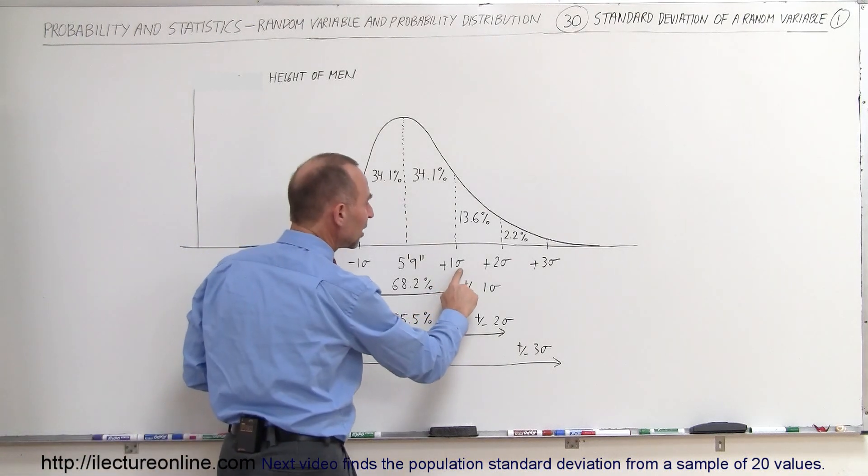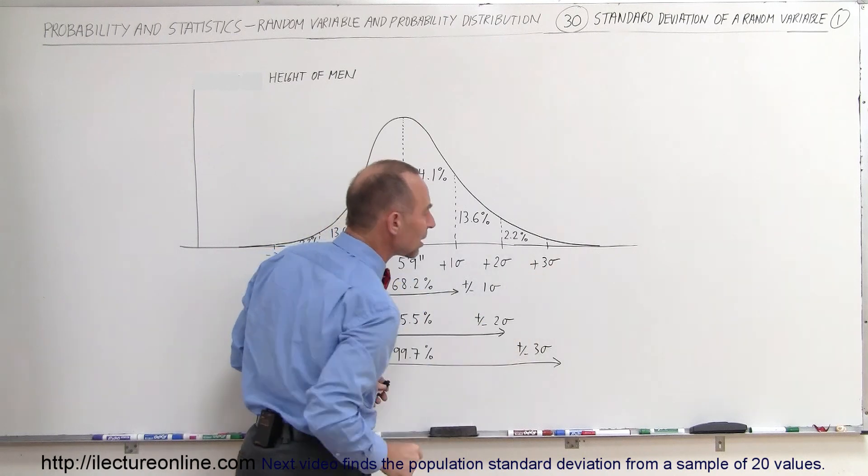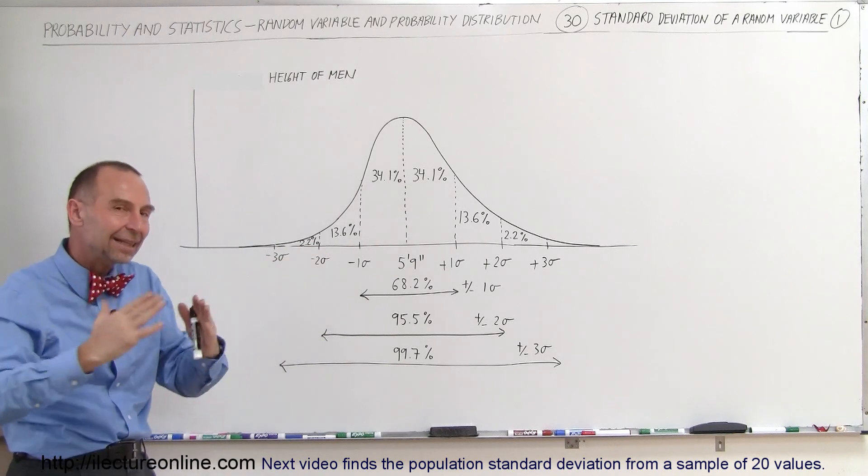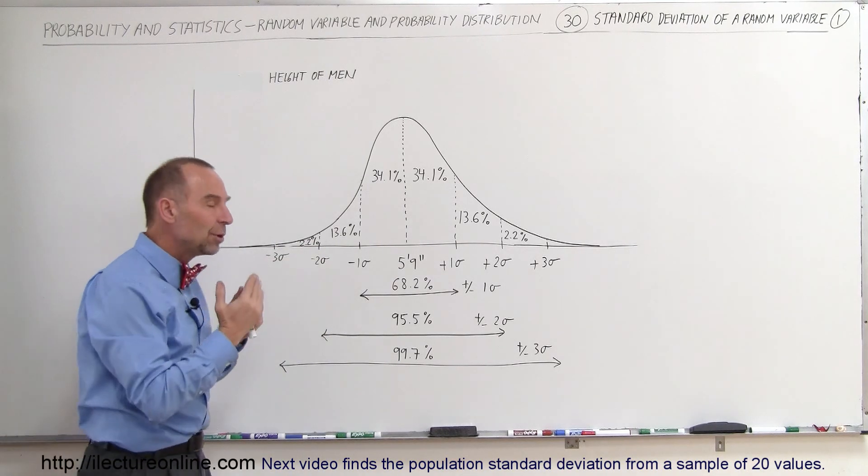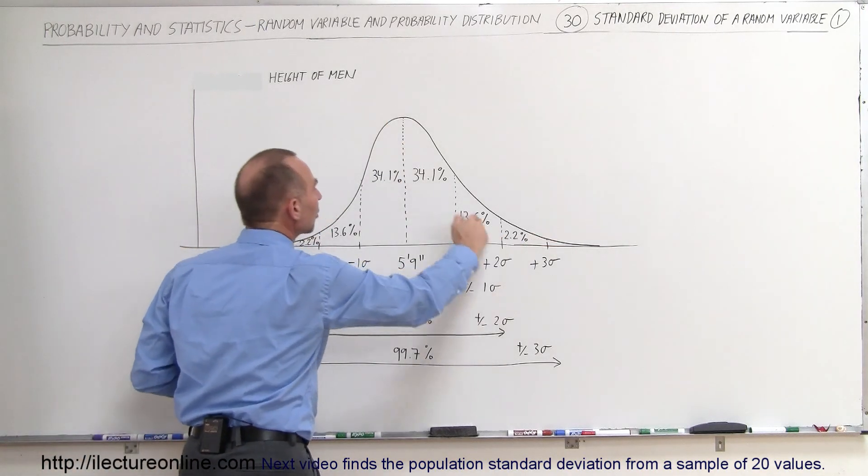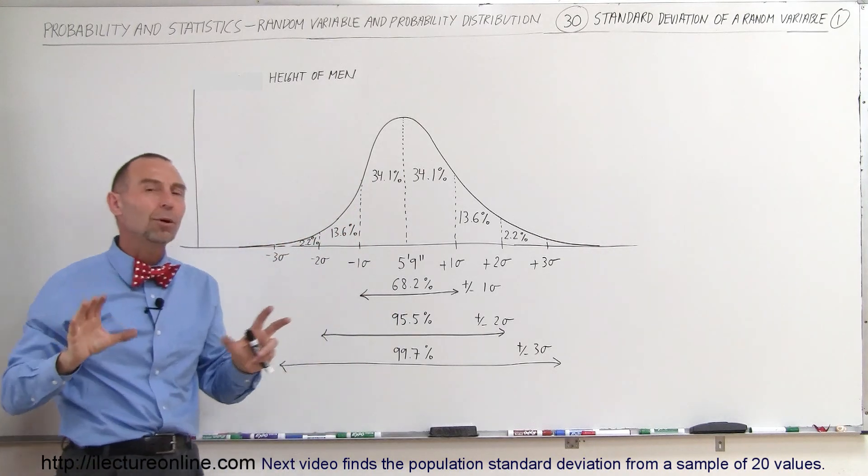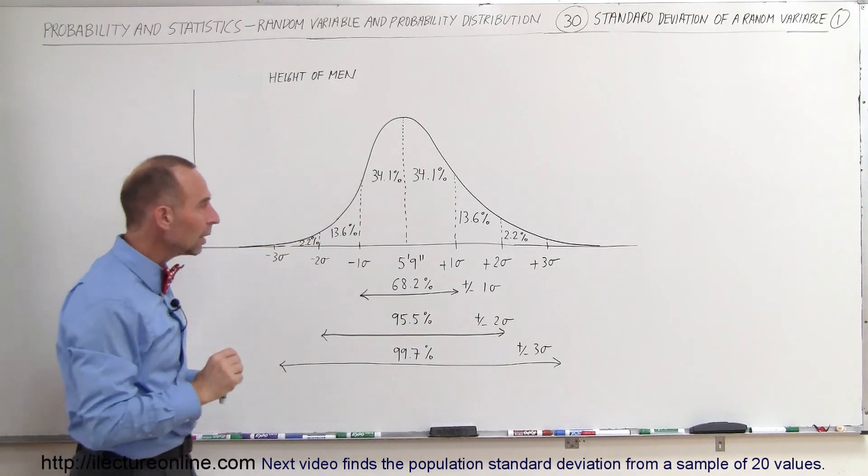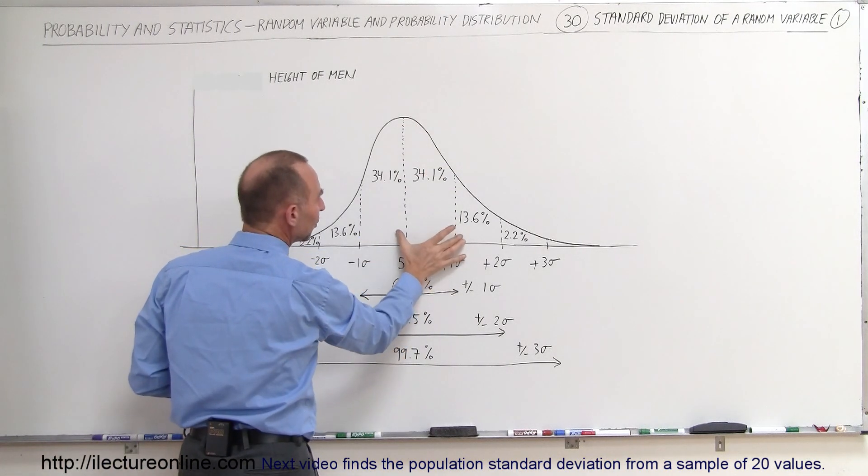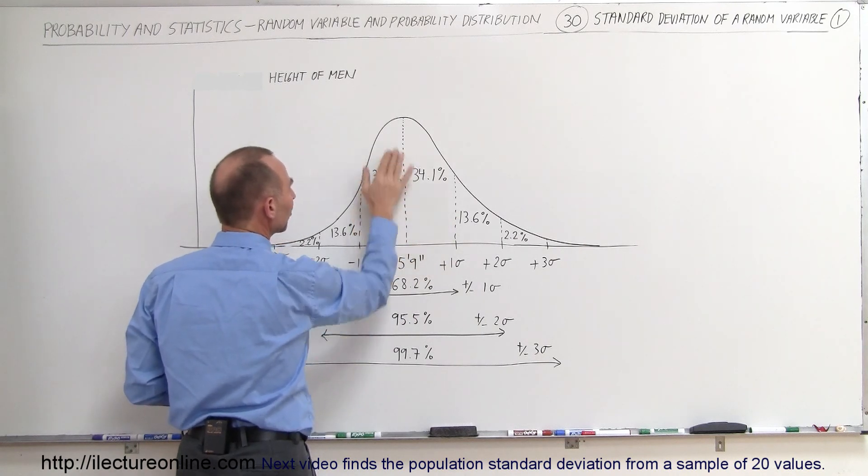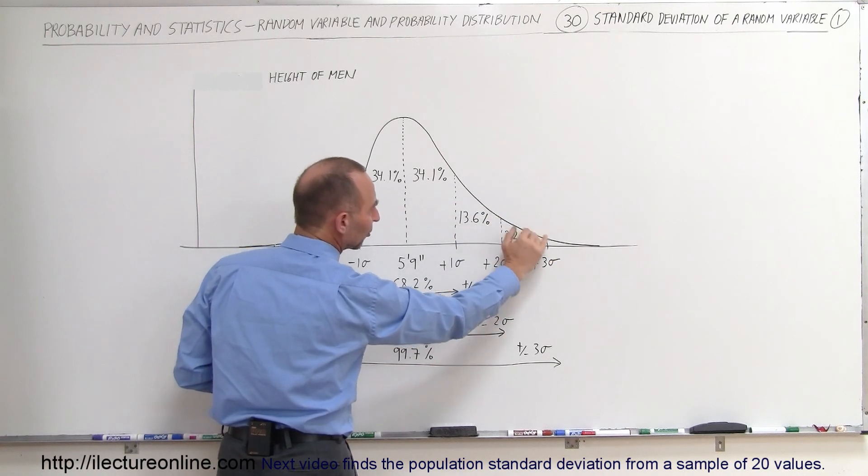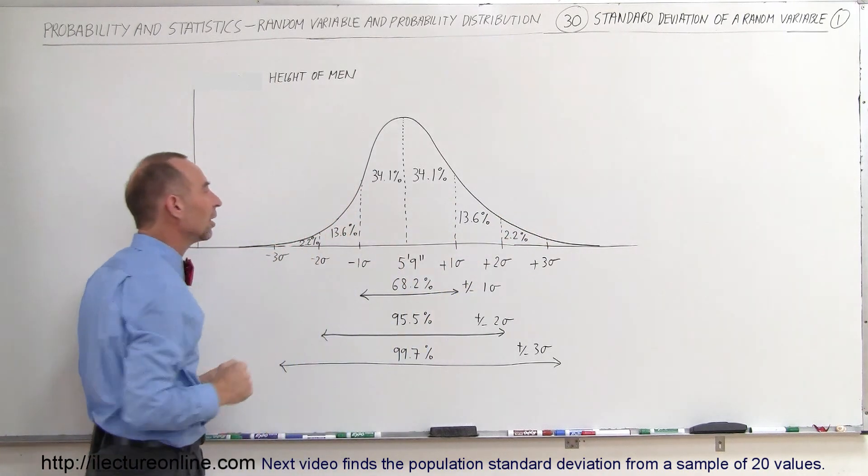And the symbol used for standard deviation is that symbol sigma right here. So sigma is a measure of how widely the numbers are distributed or how tightly the numbers are distributed. And so when we draw that into a normal curve and we have normalized this curve, then the area underneath this curve is equal to 1. What we can say then is that 34.1% of all the numbers lie between these two lines, 13.6% of all the numbers lie between those lines, 2.2% of the numbers lie between those lines and so forth on the other side as well.